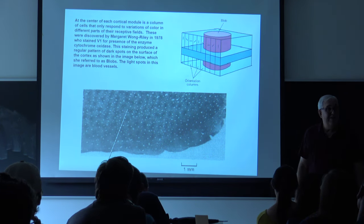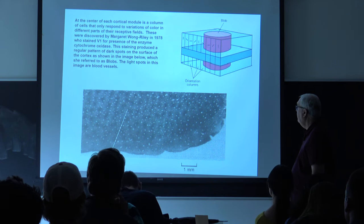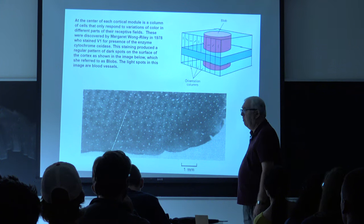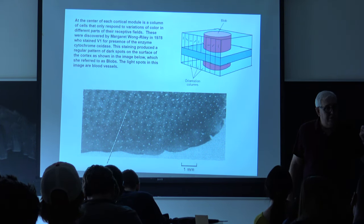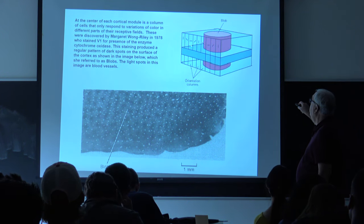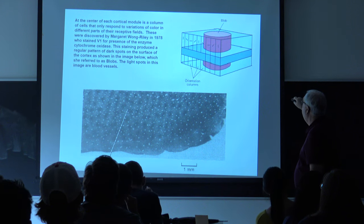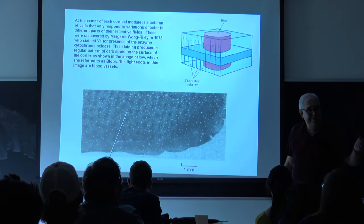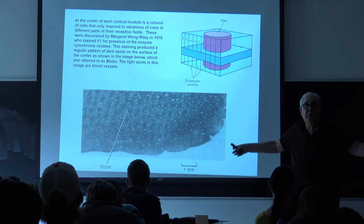There was a famous discovery in 1978 by Margaret Wong-Riley, who noticed little gray spots systematically throughout the brain tissue. She called them blobs. It turns out that the cells in those regions are sensitive to color, whereas in most of the columns they're not. So you've got orientation columns with eye dominance columns, and at the center of each one of these rectangular structures there's a cylindrical space where you have cells that respond to color. The brain is separating out color, orientation, location — all those features — keeping them segregated from one another.